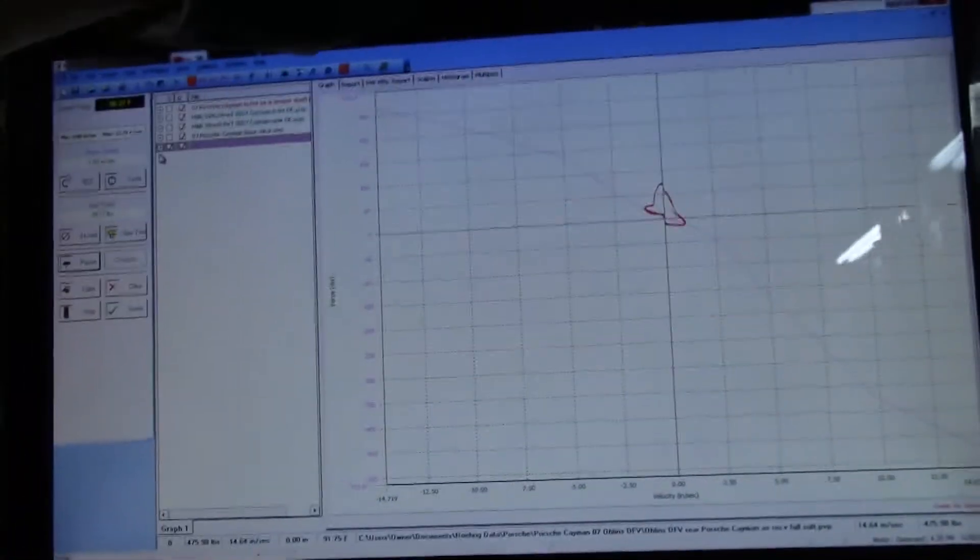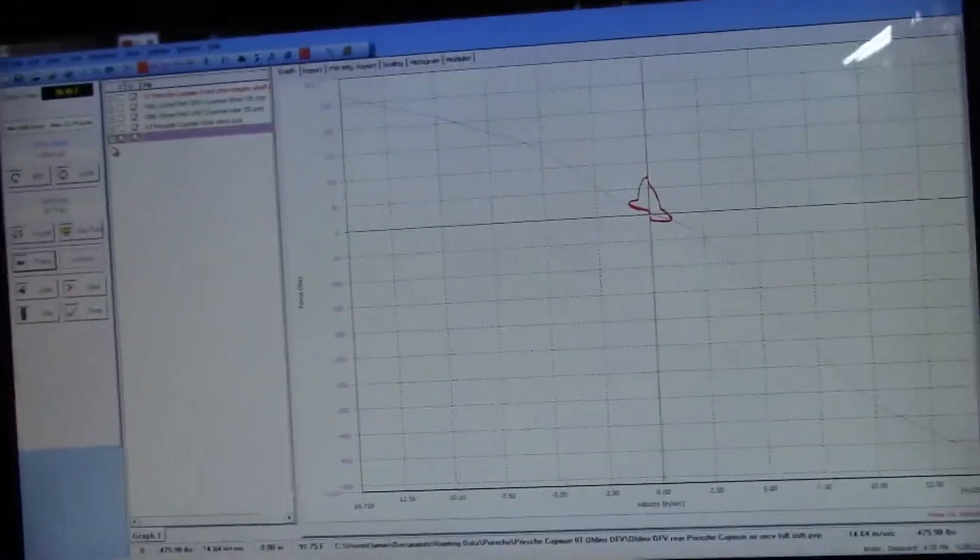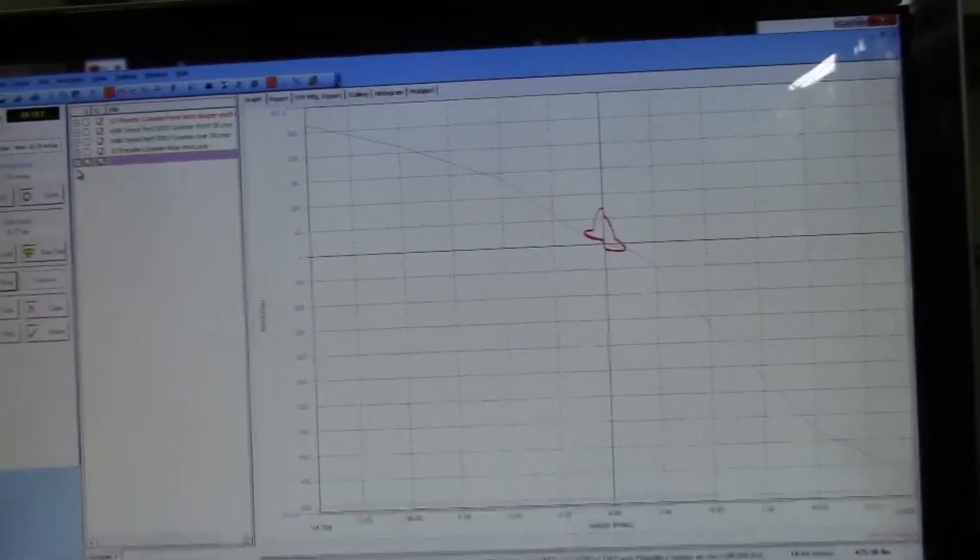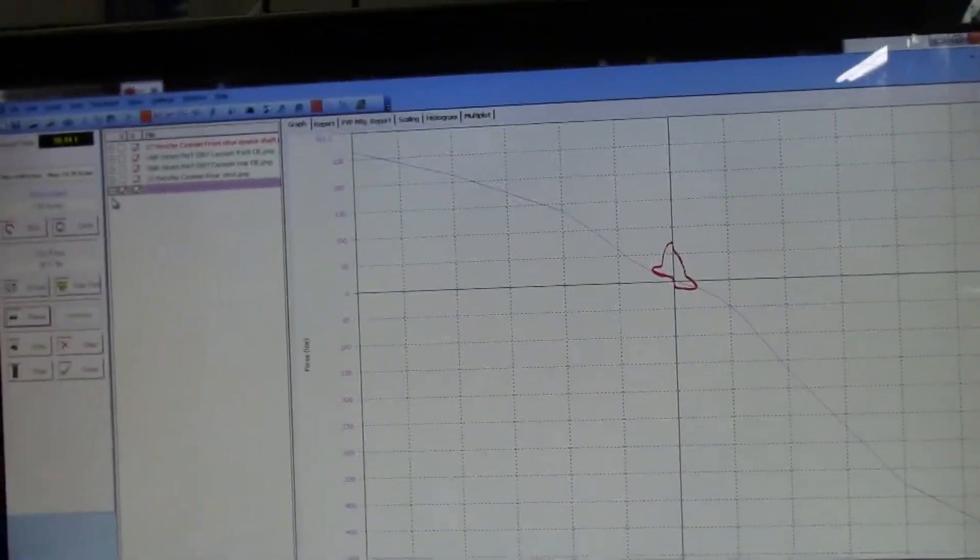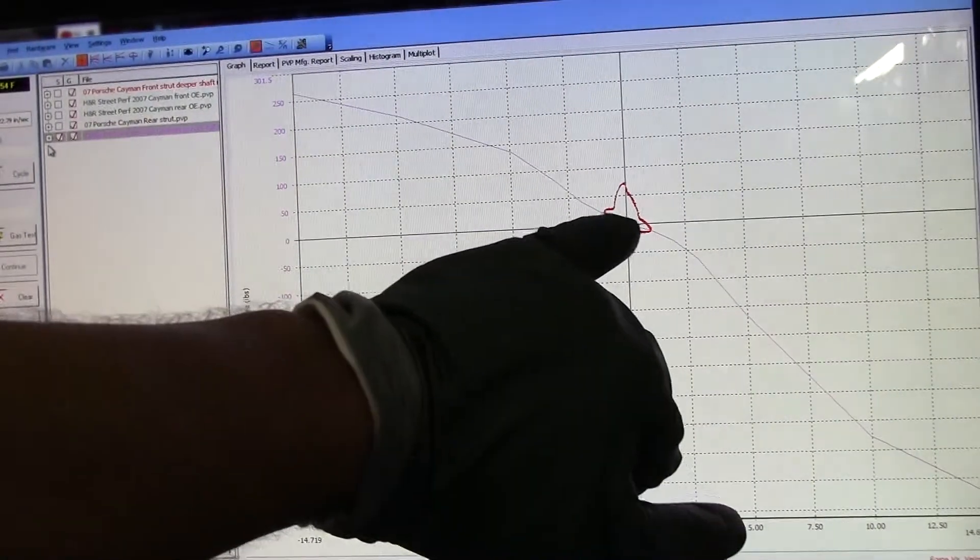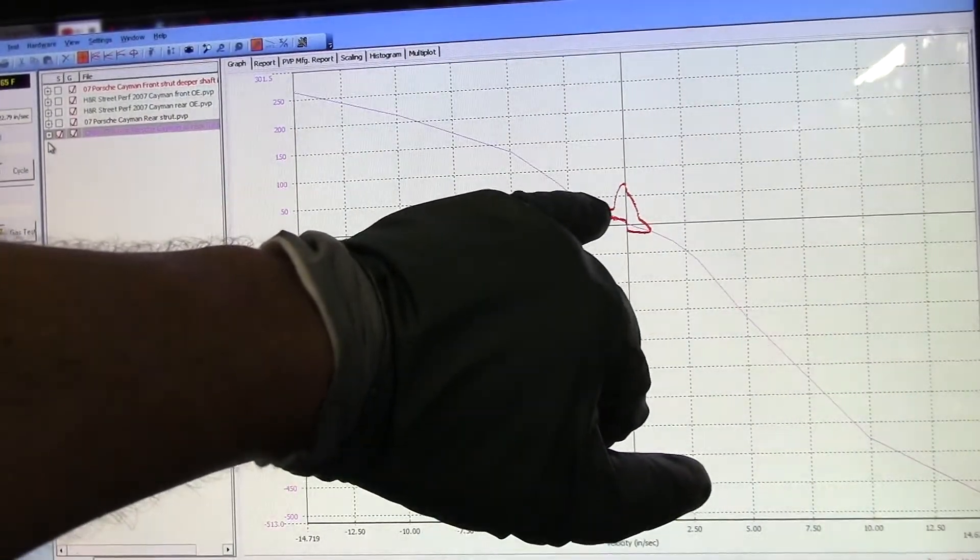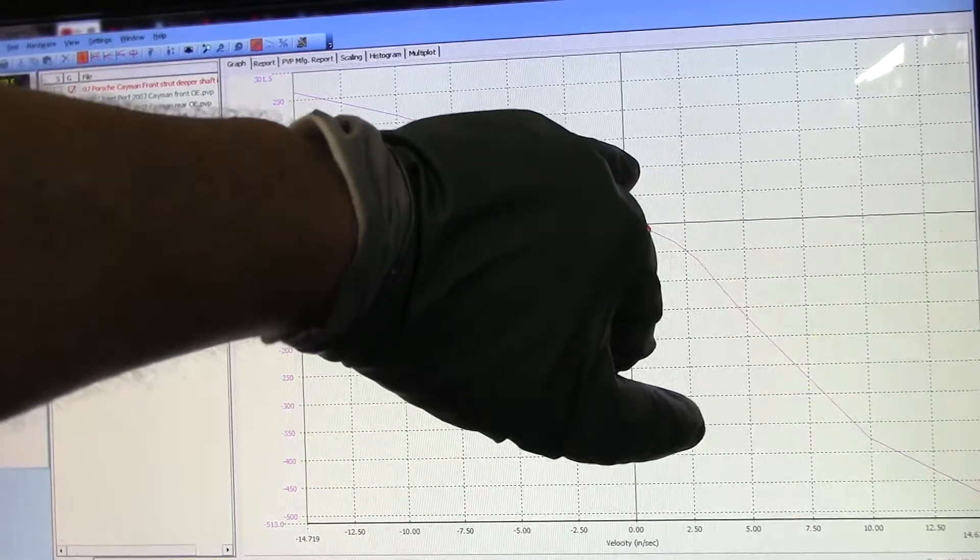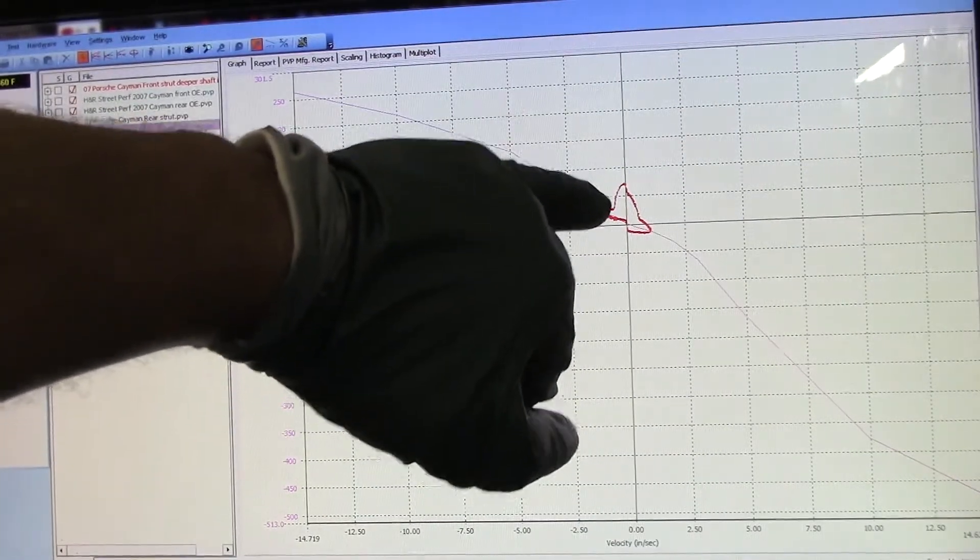So there's our current dyno result. And that spike that you see is the bump stop. Because it's going in compression, and then as it's reaching the end of its travel, the force is increasing as the bump stop is coming into play.